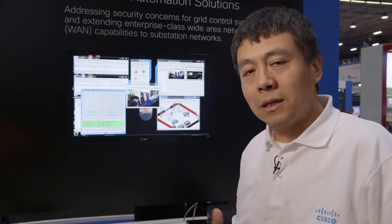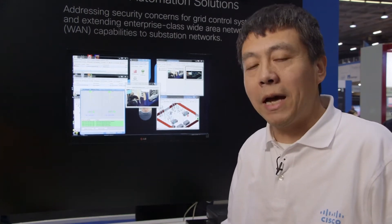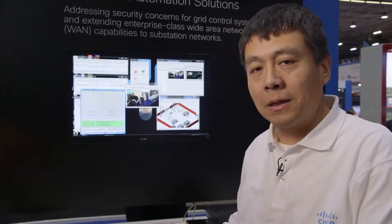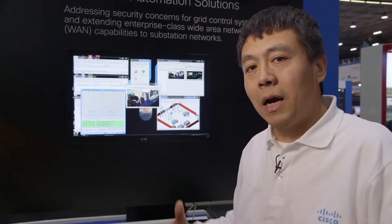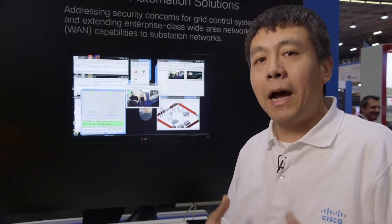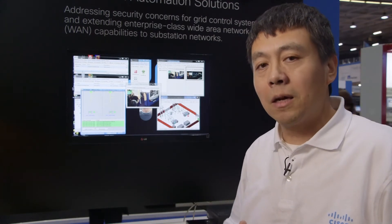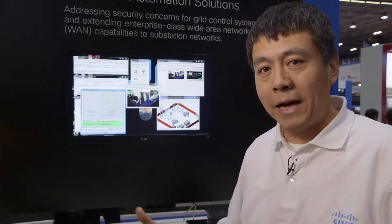In summary, Cisco's substation network solution is a converged network, which means you don't have to build a separate control network and a separate multi-services network. It's one network which can reduce the cost for maintenance and deployment. The whole infrastructure is fully protected — virtualization is built end to end, and there are firewall, IPS, and VPN capabilities built into Cisco routers and switches. Thank you.